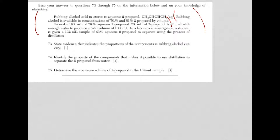Question 74 says, identify the property of the components that makes it possible to use distillation to separate 2-propanol from water. Well, 2-propanol and water are both liquids. Distillation, you need to remember, is when I have a mixture of liquids, they will be separated by boiling point.